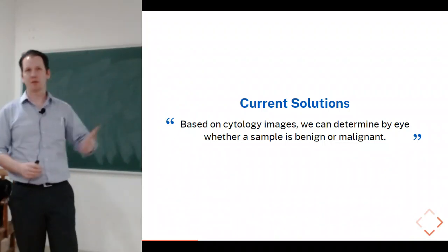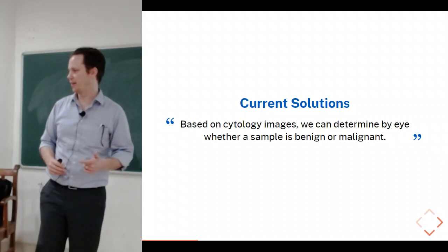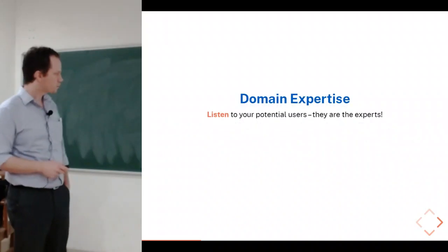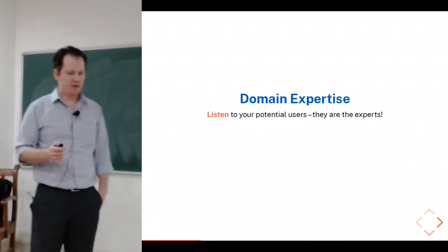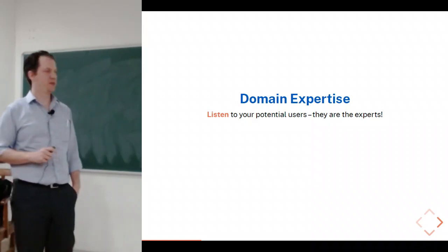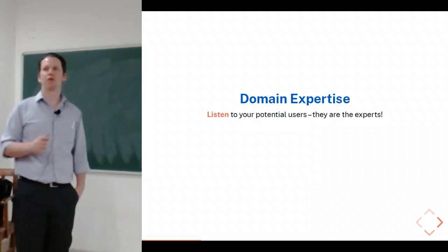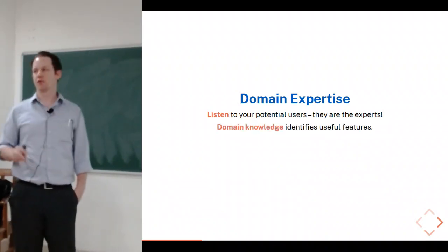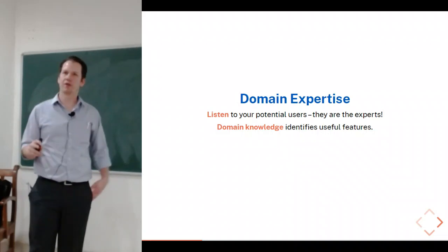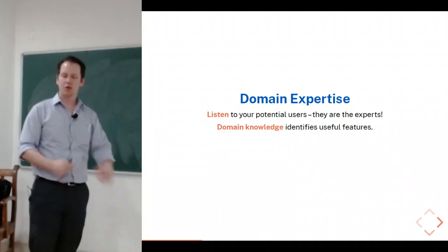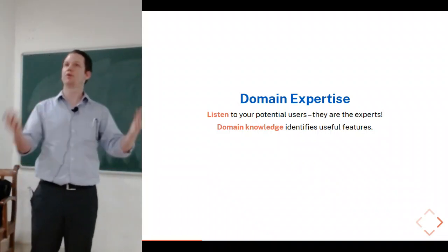We have images and criteria pathologists have identified to distinguish benign from malignant — that's how it's done normally. One critically important thing that not enough engineers do is listen to the experts asking them to perform a task. They're the ones who will use whatever algorithms you build, and they're a valuable source of domain knowledge — the context of the problem you need to understand to build a good model.